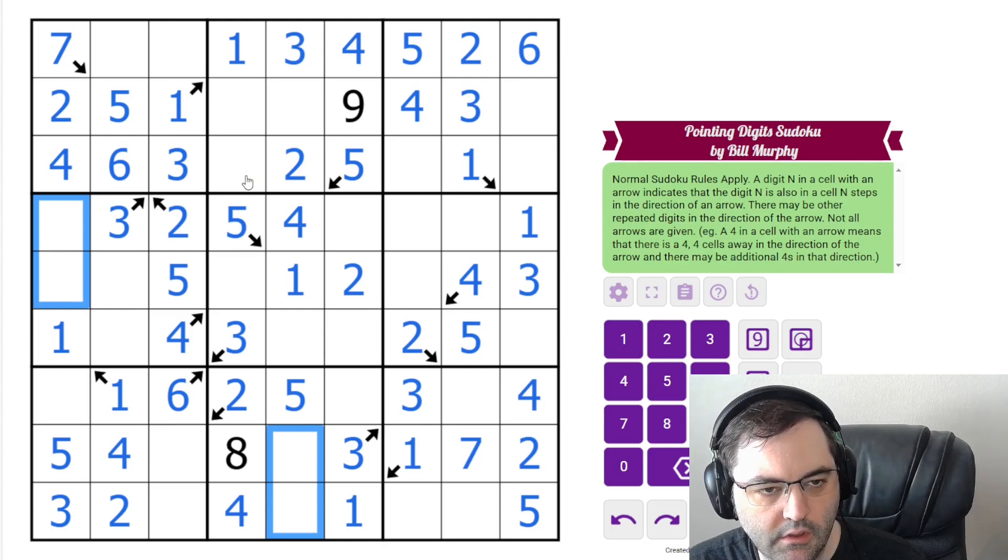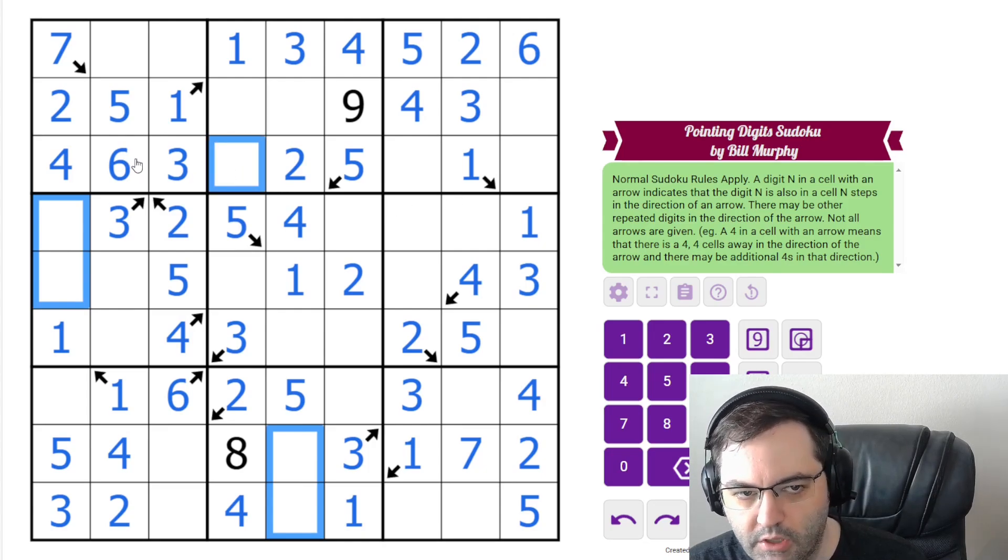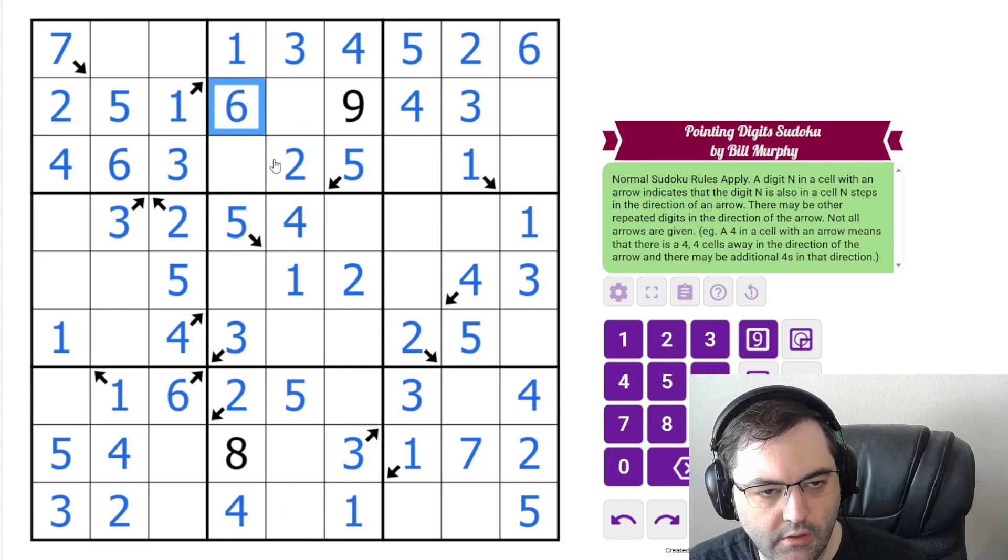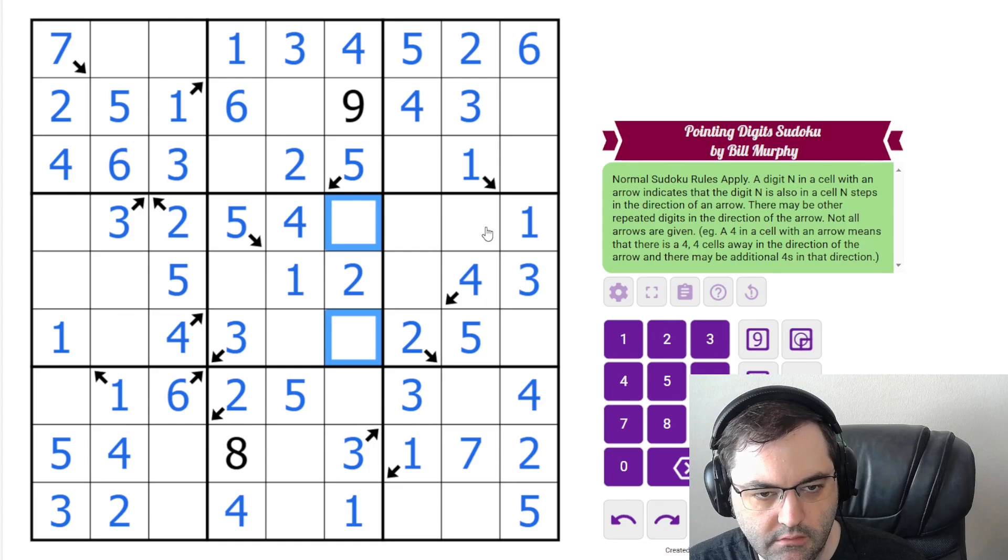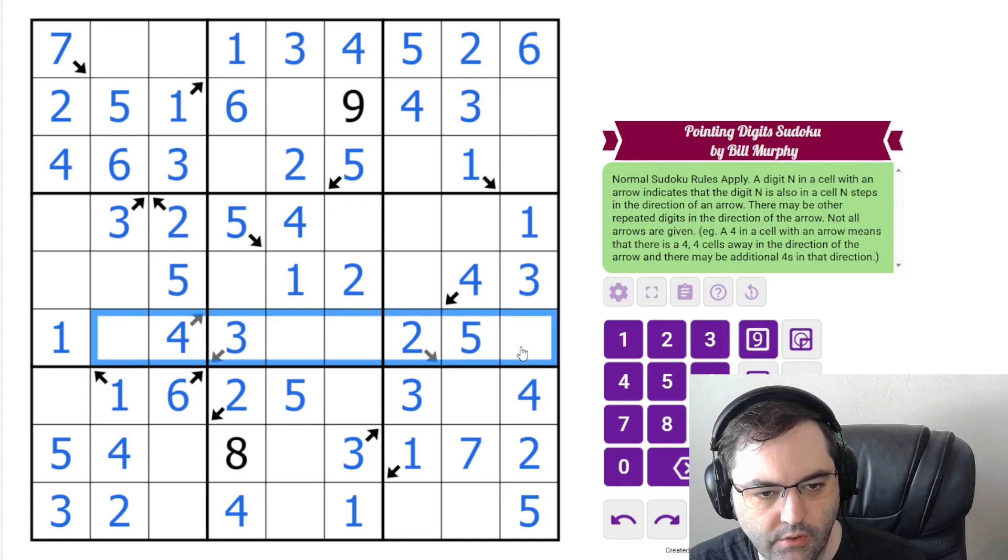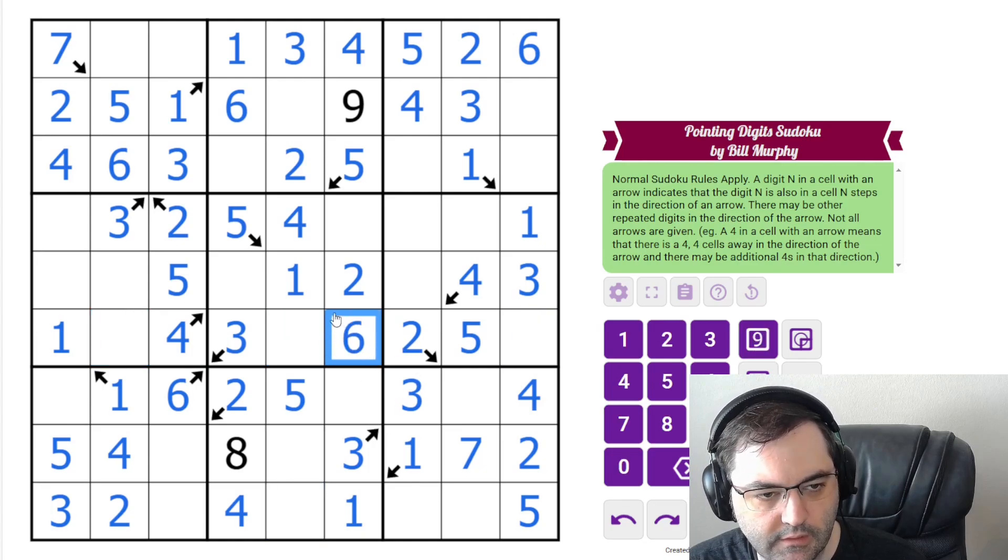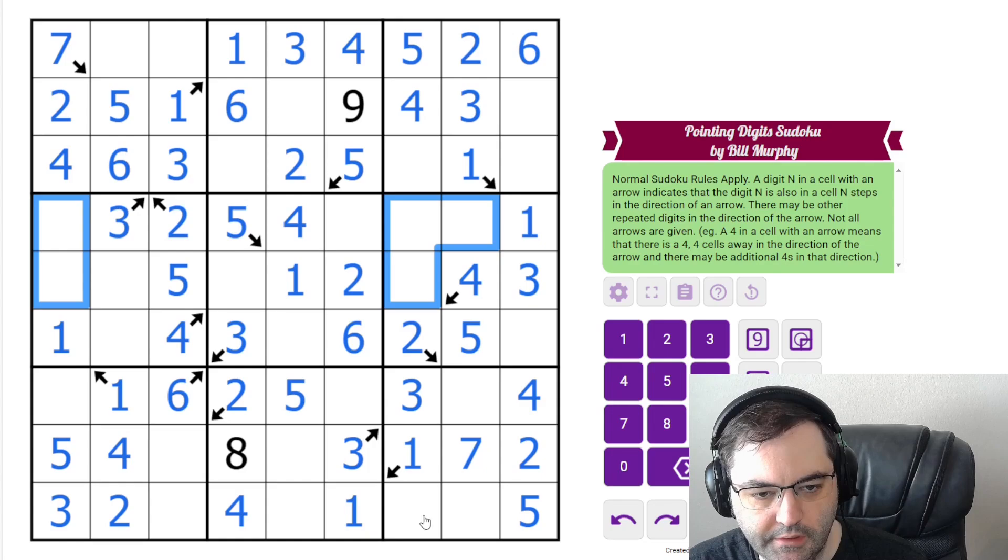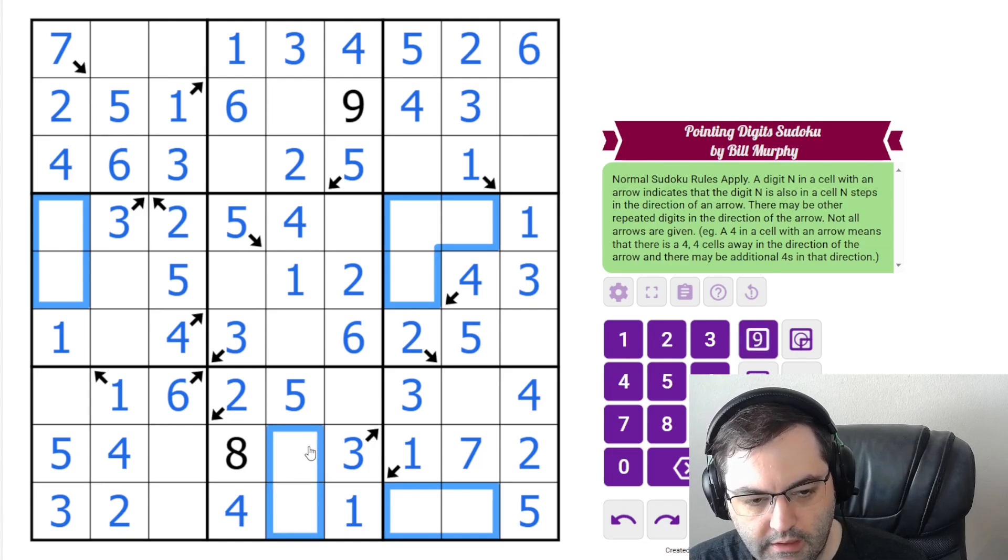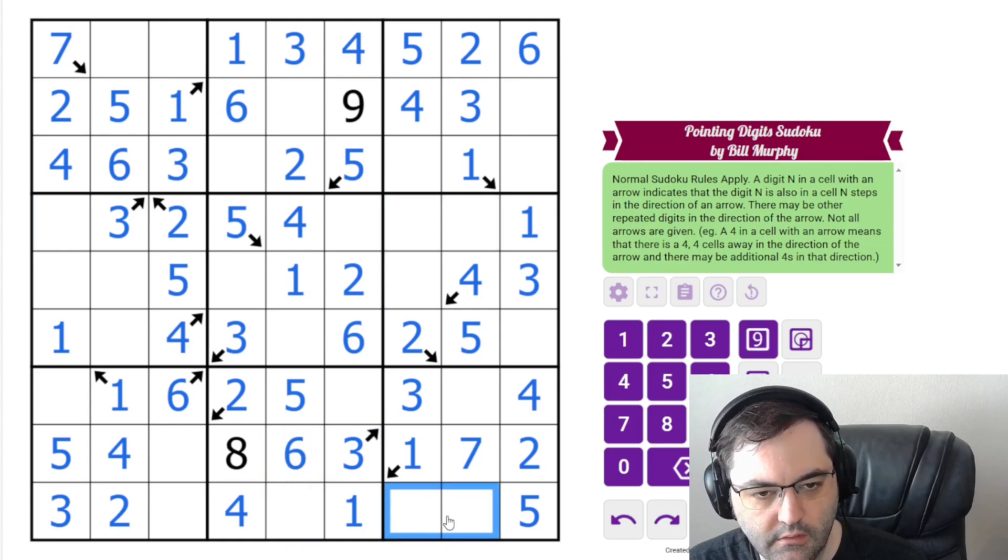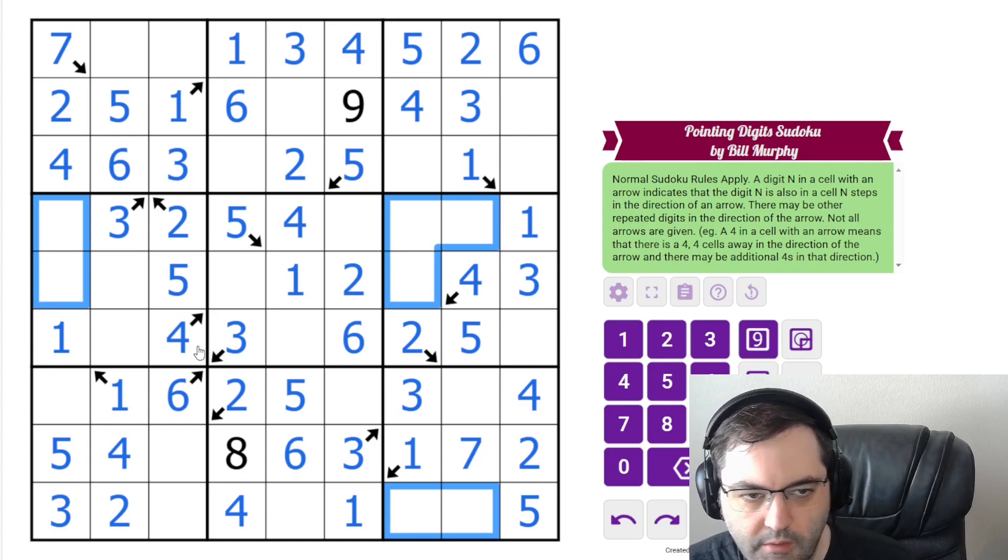It can't go here because of this six, and it can't go here because six is in one of these cells. So it must be here. That means in this box, it's in one of these. Let's see where it's limited now. Okay, this row, it can't go here. It can't go here because six is in one of these. It can't go here. So this must be six. That's going to leave us with... Ah, six must go in one of these. So it's not here. So this is six. It's going to leave us with these as our remaining places for six.